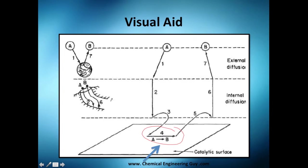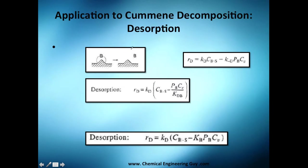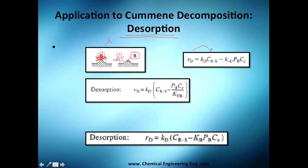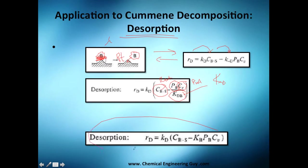We are in step 4, the surface reaction. Now for step 5 — desorption of benzene. Cumene turned into benzene and propylene, which is already flying. We break the bond between benzene and the platinum active site. The desorption rate equation has a forward rate using Kd of the desorption for products and a reverse rate for reactants.